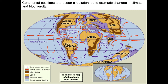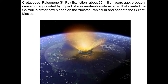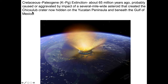The Cretaceous came to an end — a very dramatic, devastating end — at the beginning of the Paleogene. This is the KT boundary extinction, which we now call the KPG extinction, that occurred 65 million years ago. It was caused by, or maybe made worse by, the impact of a multi-mile-wide asteroid that created a large crater located in Chicxulub on the Yucatan Peninsula. About half of it is on land, and the other half is under the Gulf of Mexico.